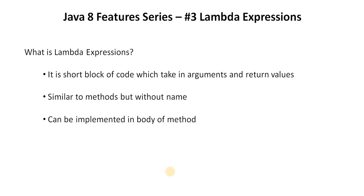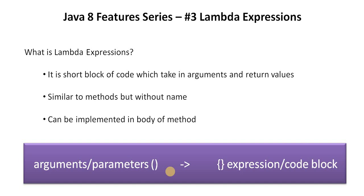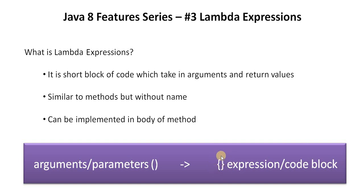A lambda expression is a short block of code which takes some arguments or parameters and returns some values. These expressions are similar to methods but they do not have any method name, and they can be implemented in the body of a method itself. The syntax is threefold: the first part is arguments or parameters, next is the arrow operator added in Java 8, and third is the code block or expression where you provide your business logic.